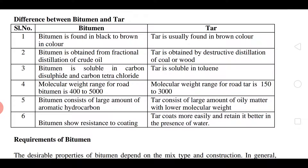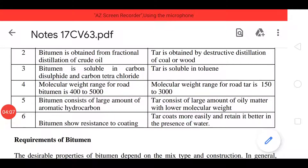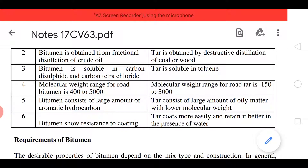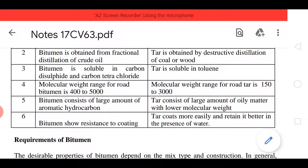Bitumen consists of a large amount of aromatic hydrocarbons, whereas tar consists of a large amount of oil matter with lower molecular weight. This aromatic hydrocarbon is a hexagonal compound — examples such as benzene and toluene come into picture.